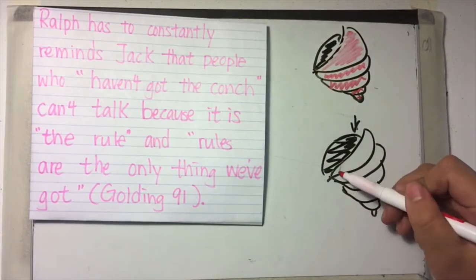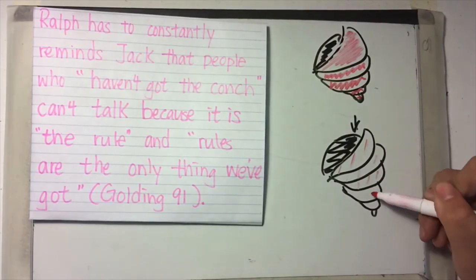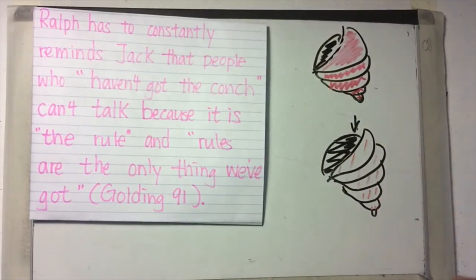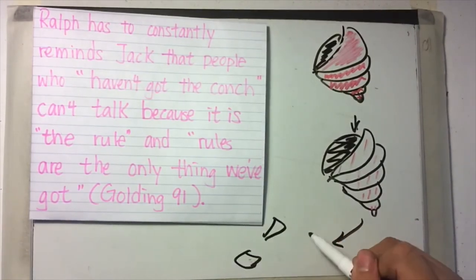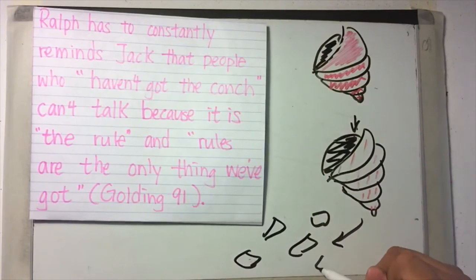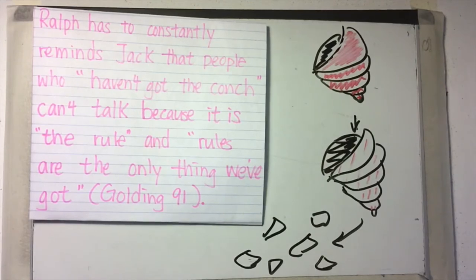Later, as its color fades, the civilized behavior of the boys fade as well, and their savage actions and thoughts increase. Lastly, when the shell breaks, the last bit of civilized behavior disappears within the boys. The conch represents the stages of the boys turning away from civilization and resorting to savage behavior, and as the conch, a symbol of civilized society, becomes insignificant to the boys, Golding foreshadows the savagery that begins to emerge in each boy.